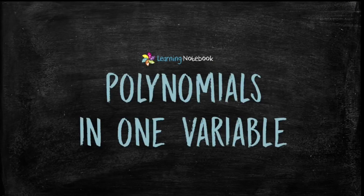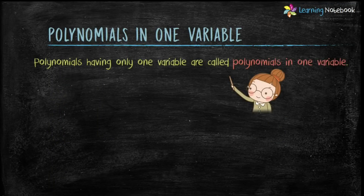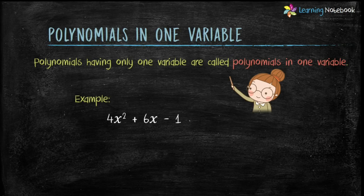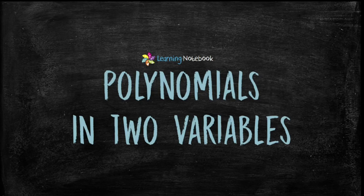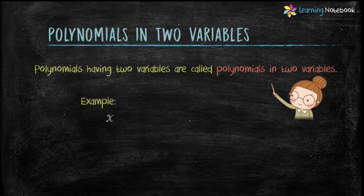The next topic is polynomials in one variable. Polynomials having only one variable are called polynomials in one variable. For example, 4x square plus 6x minus 1 is a polynomial in one variable because it has only one variable, x. Polynomials having two variables are called polynomials in two variables. For example, x minus y plus 1 has two variables x and y, so this is a polynomial in two variables.